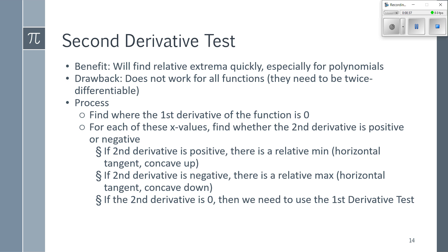The drawback is it doesn't always work. It requires a function to be twice differentiable, meaning the second derivative has to exist everywhere. There are functions that may be differentiable — meaning the first derivative always exists — but the second derivative may not always exist. The second derivative test takes advantage of concavity. Please note: this does not find concavity, it uses concavity. Don't say a function is concave up because of the second derivative test — it uses concavity, it doesn't find it.